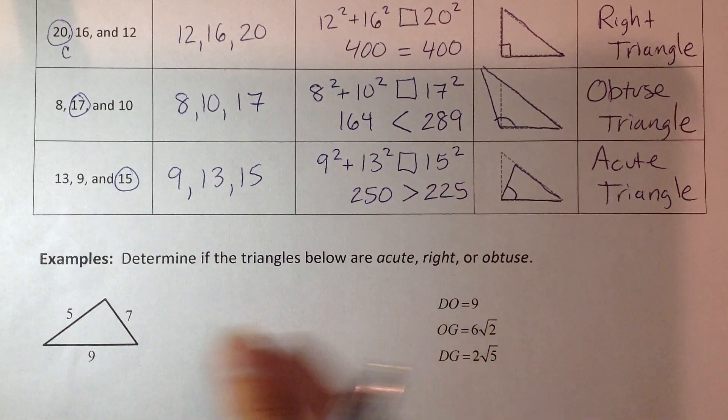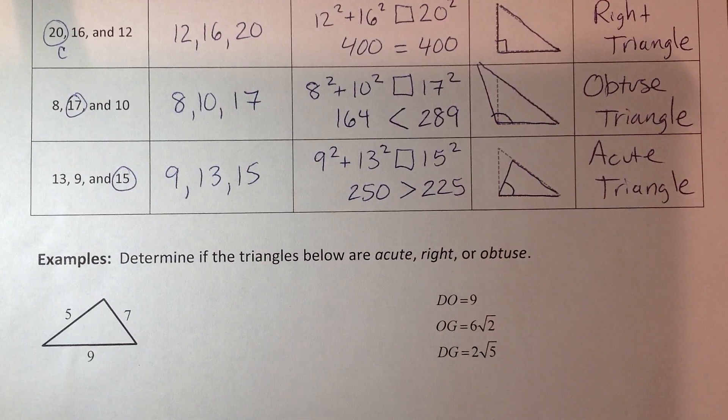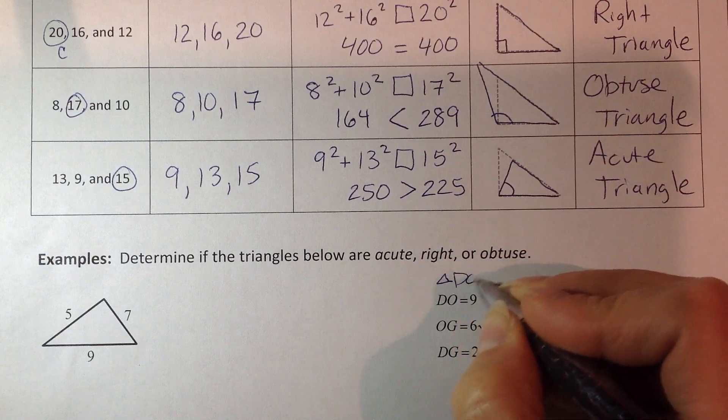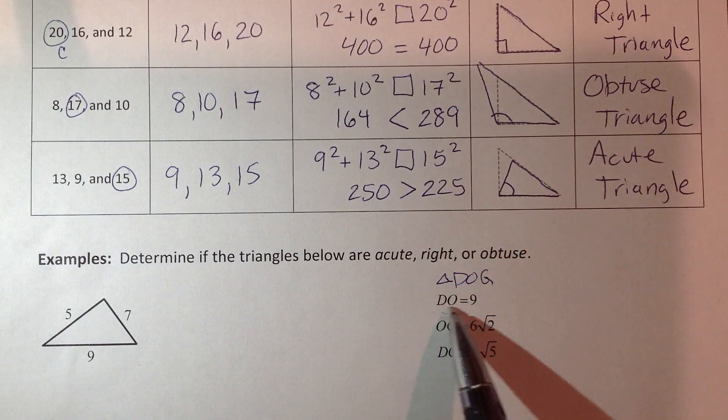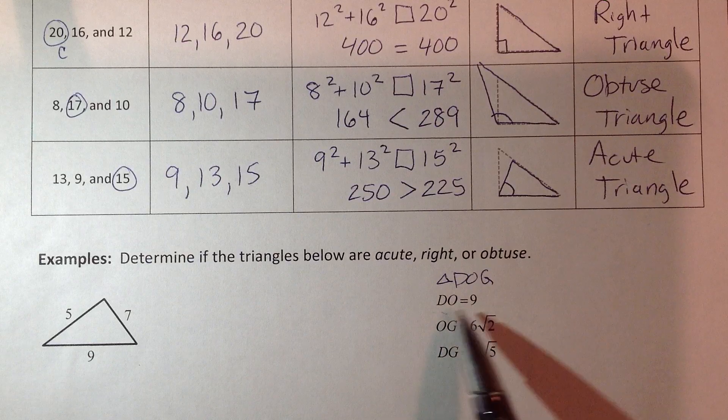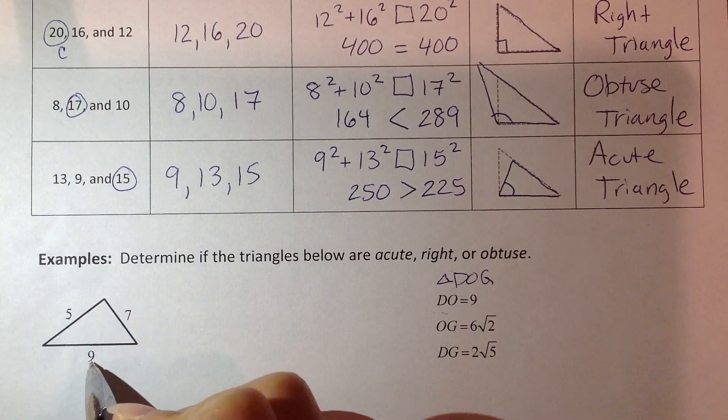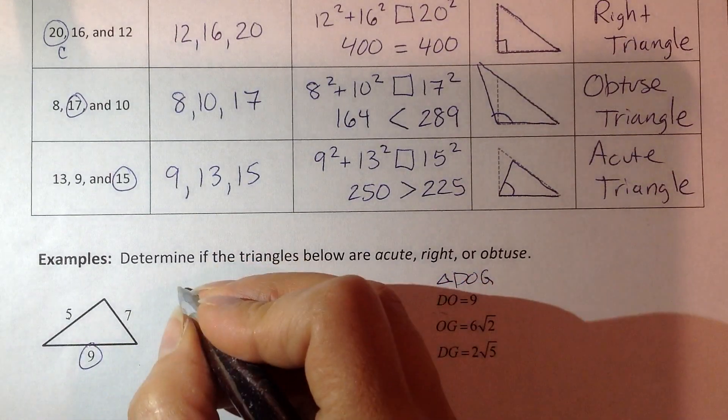So I actually am giving you two problems here. We're going to look at one where, what if they gave me a picture? Or what if they gave me the lengths of three sides? This is triangle D, O, G, right? D, O, and G. So they gave us three lengths of that triangle. You approach it the same way either way. Where's the longest side? Put that into C.